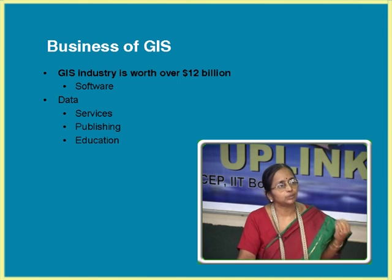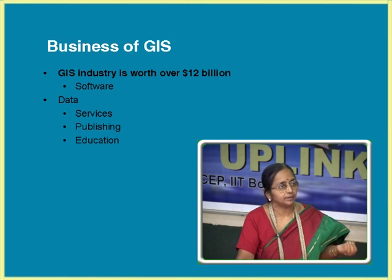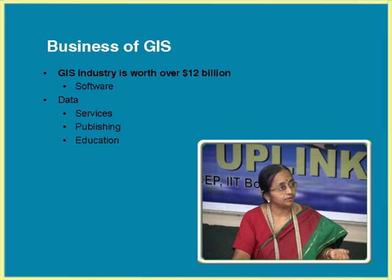There are people who provide data on charge because information is power — it can be bought and sold for money. Data, software, services, people provide data conversion services, web services, publications, training. It is around a 12 billion dollar industry. Every day the technology is growing and applications are growing.